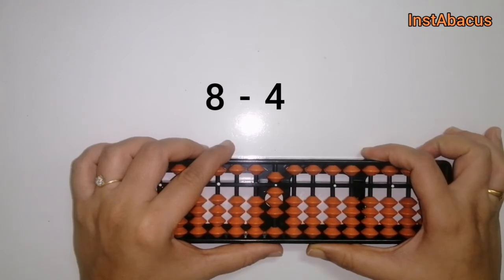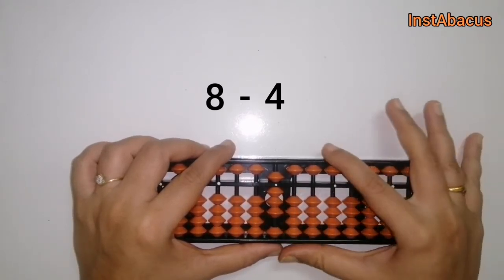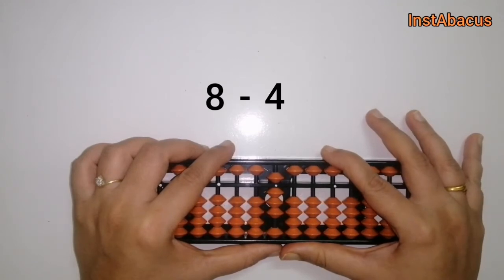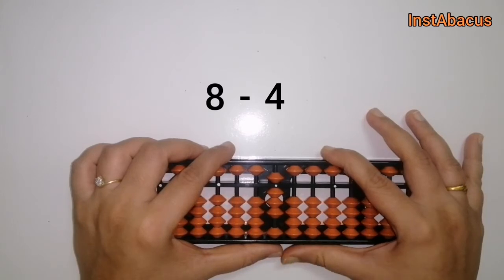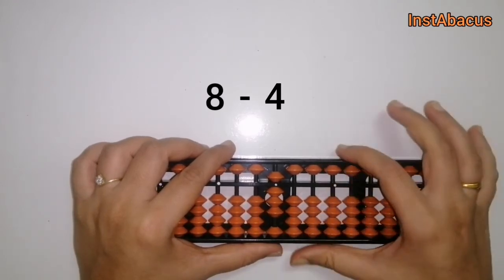How are we going to do that? We don't have 4 earthly bits the way we do in a simple subtraction, right? So what are we going to do? We will ask for help from our small friend. Right, the small friend of 4 is 1.